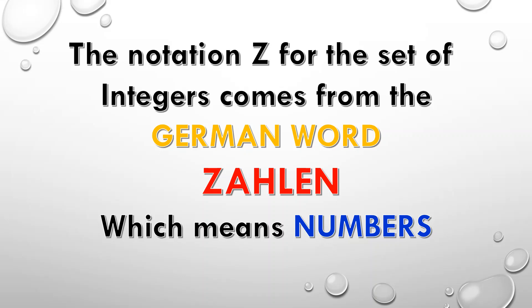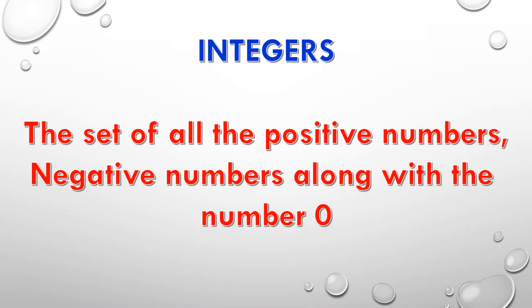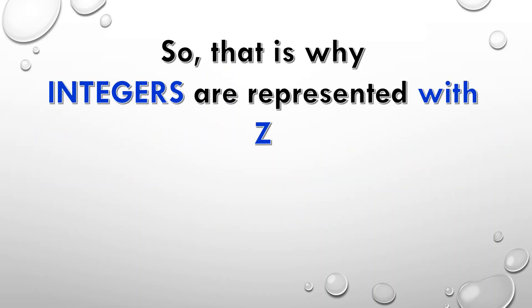Because it originated from the German word Zellen, which means numbers. Integers are nothing but the set of all the positive numbers, negative numbers along with the number 0. When integers are representing all the types of numbers — whether positive, negative, or 0 — their representation comes from Zellen. Zellen starts from Z, so integers are also represented with Z.